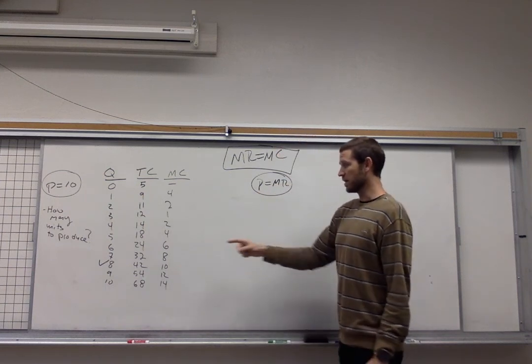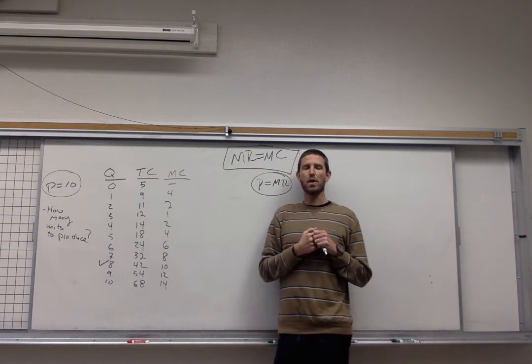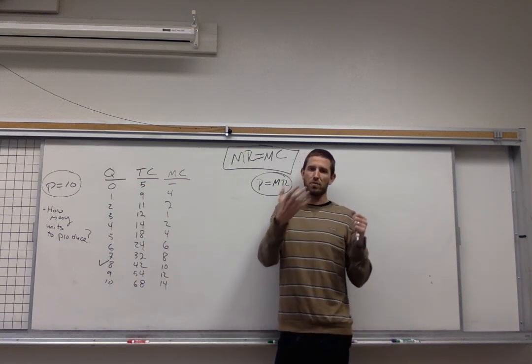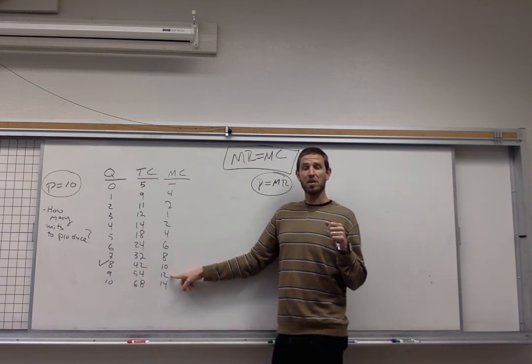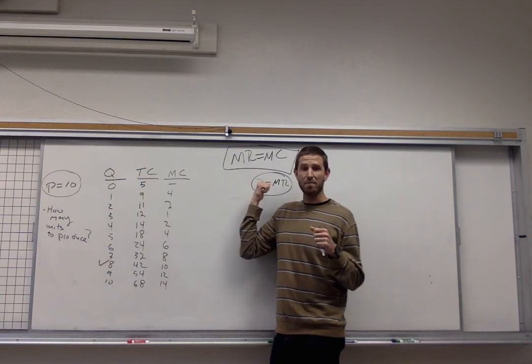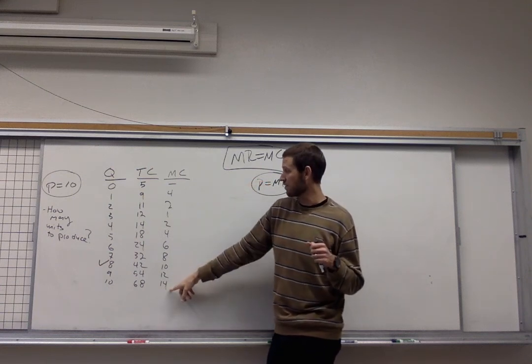The reason why is because units after the eighth one end up costing this firm more to produce than they would receive in extra revenue. It costs them another twelve bucks to make this whereas they only are going to receive another ten bucks when they sell it. You shouldn't do that. Your profits will fall. Same thing for the tenth unit.